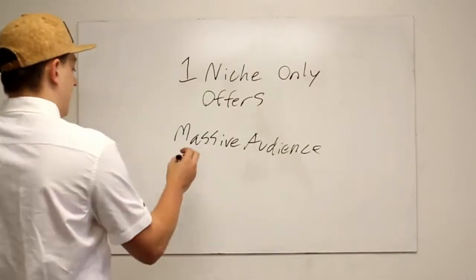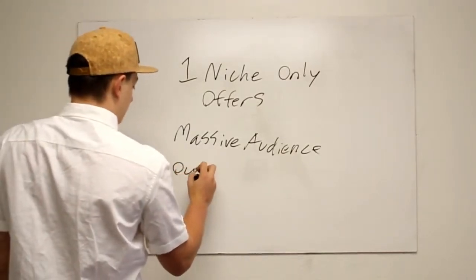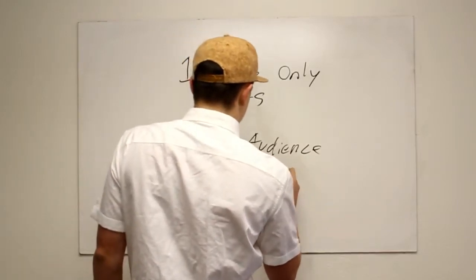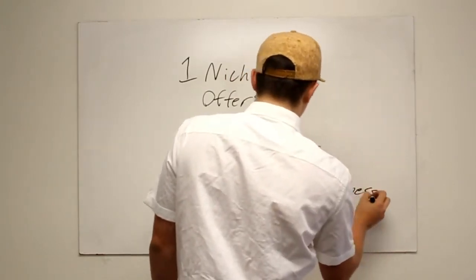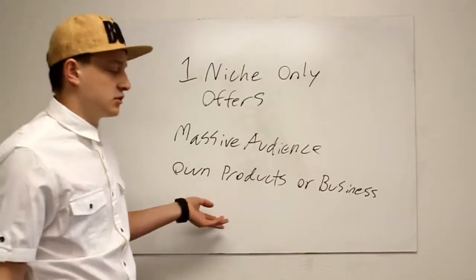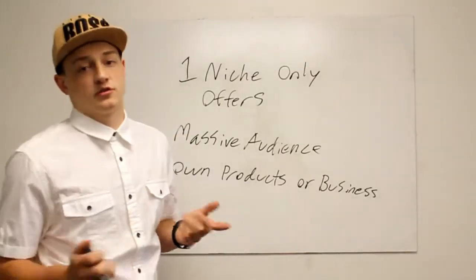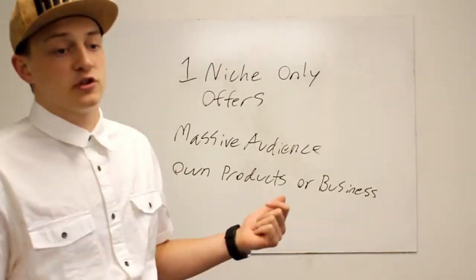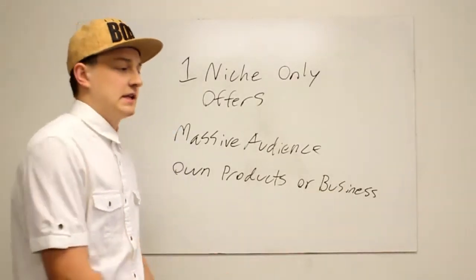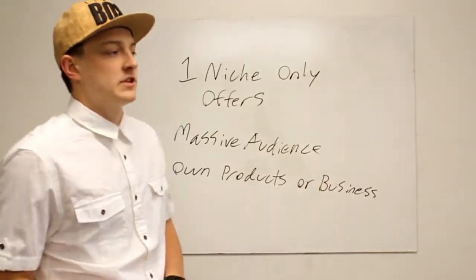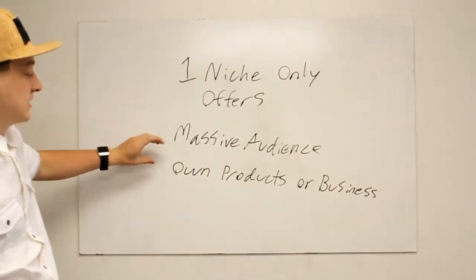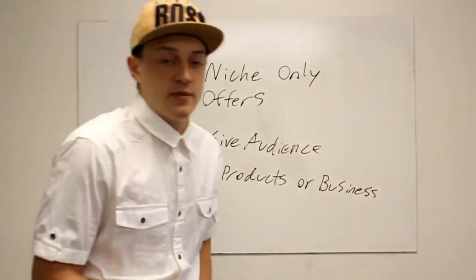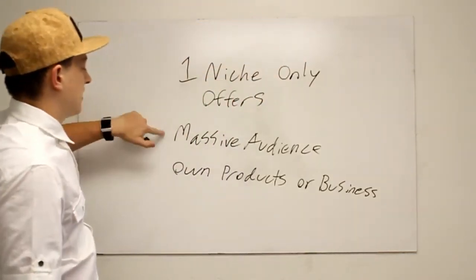The third method is having your own products or your own business. You run your business as any traditional business with a product or service, but in the backend you're promoting offers from indirect competitors, partnered with them, sending traffic their way and getting a kickback for it. That is one of the best methods. Big influencers do this one, businesses do this one. So those are the three methods — and the ones I primarily teach.